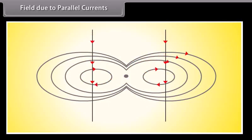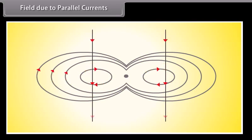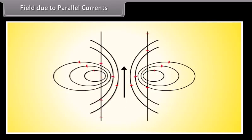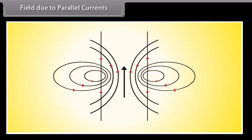The combined magnetic field due to two parallel conductors carrying current in the same direction shows a pattern that indicates attraction between the conductors. The combined magnetic field due to two parallel conductors carrying currents in opposite directions shows a pattern that indicates repulsion between the conductors.